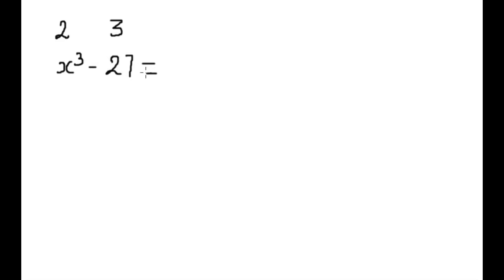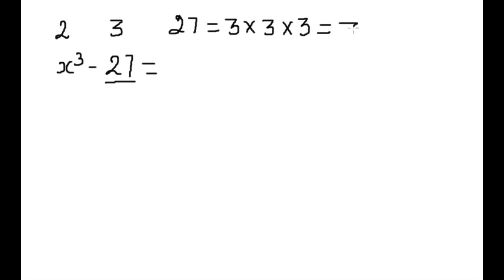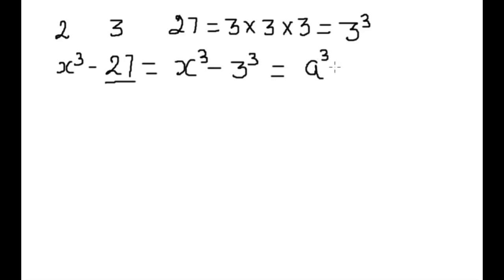This is our binomial polynomial. How to do factorization? First we will factorize 27. We can write 27 as 3 into 3 into 3, and this is also called cube of 3. So we can write this as x cube minus cube of 3.